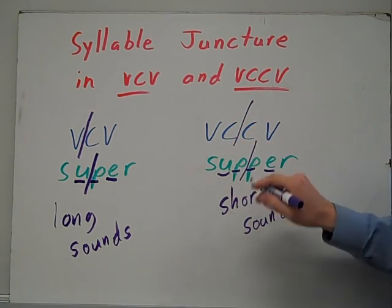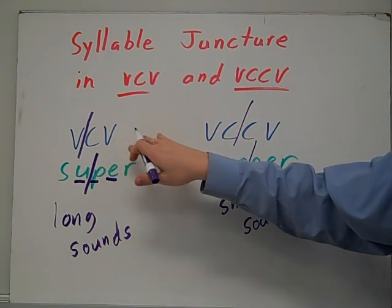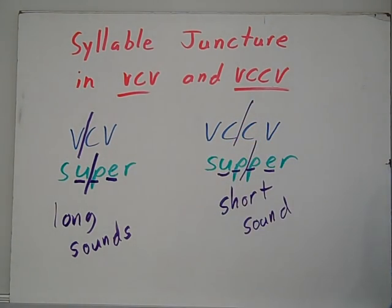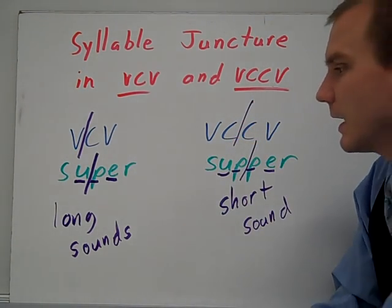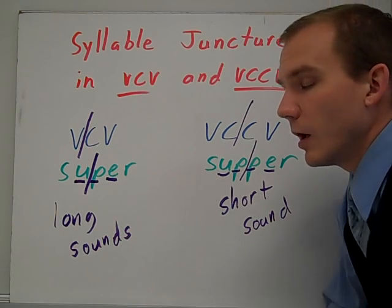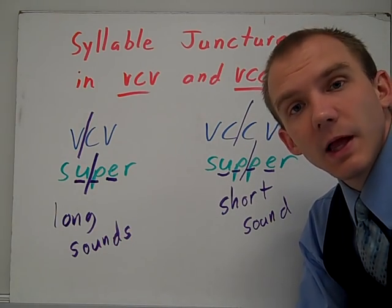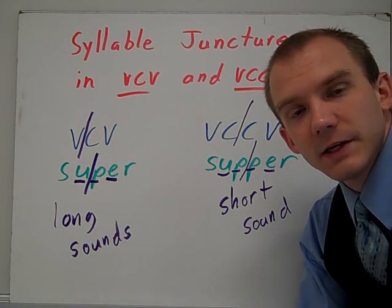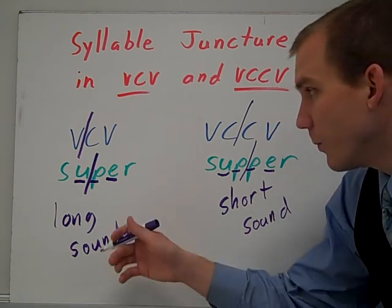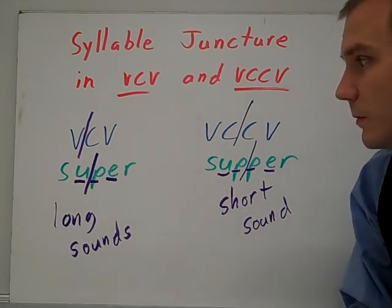VCCV has short sounds. VCV has long sounds. And these are what we're going to call open syllables — that first syllable ends in a long vowel sound, so it's considered an open first syllable.